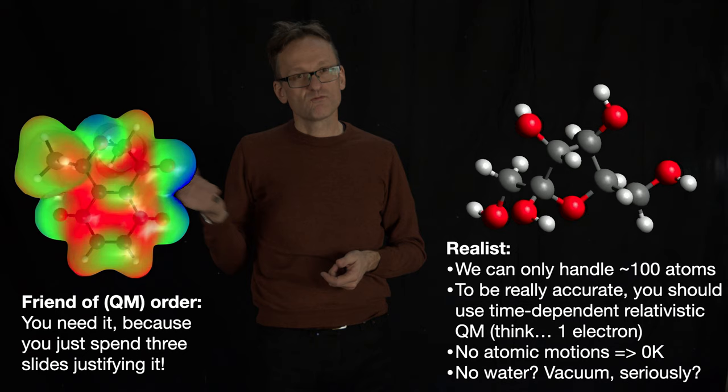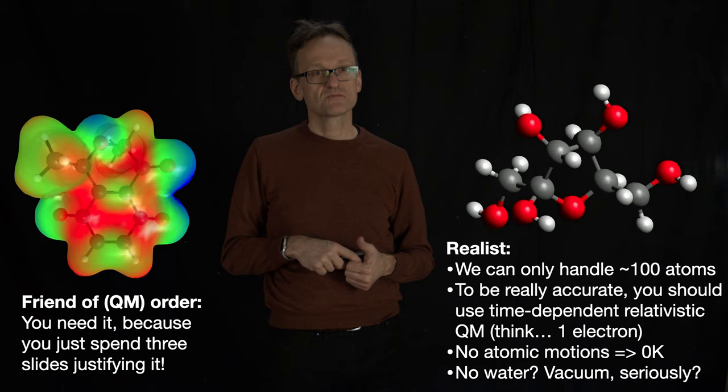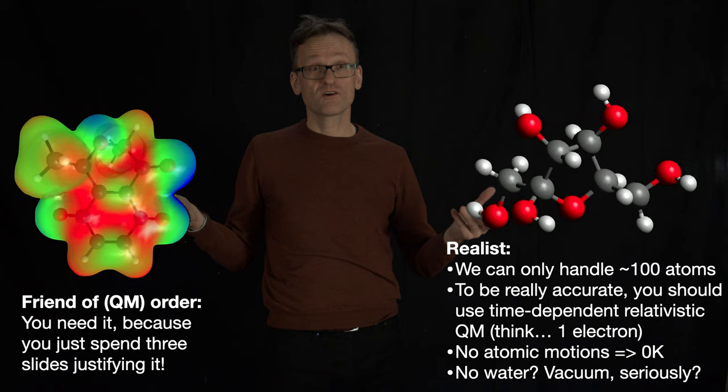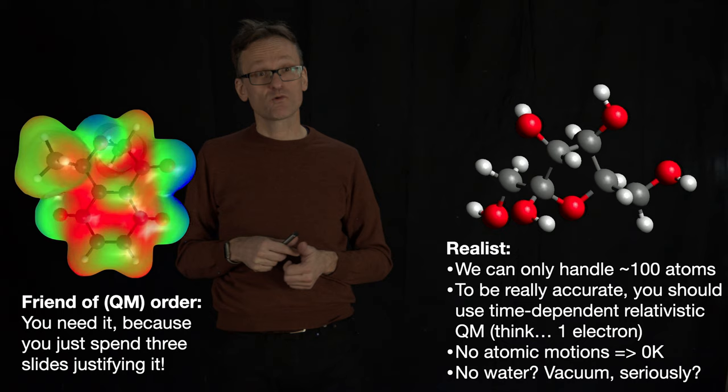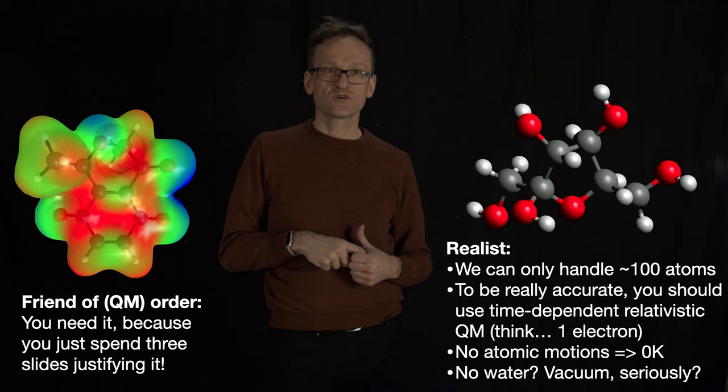The other problem is that what I have on the other side isn't really accurate either. Because what you do in quantum chemistry is put things in a computer and calculate what is the best possible distribution of electrons. But to do it properly, you would have to solve the time-dependent relativistic Schrödinger equation, and you can probably do that for about one electron.